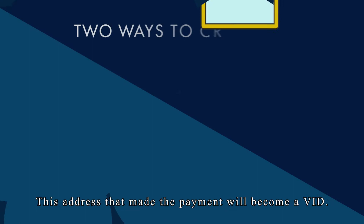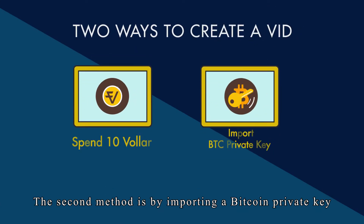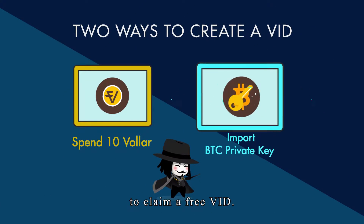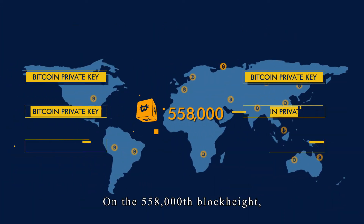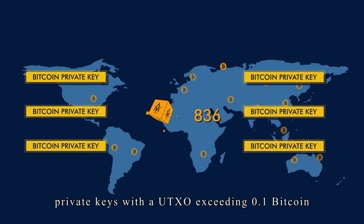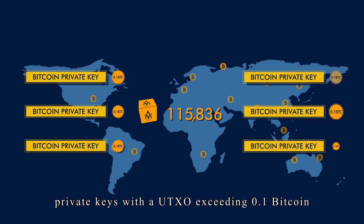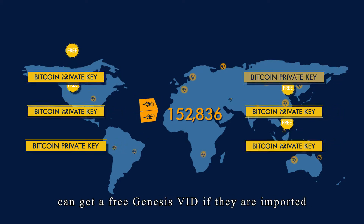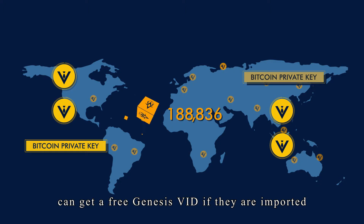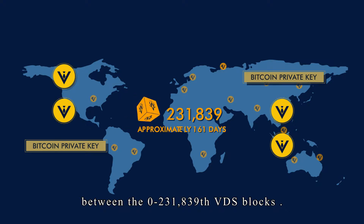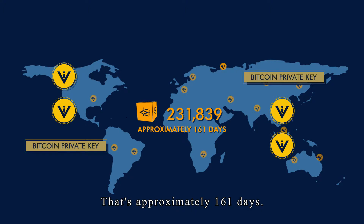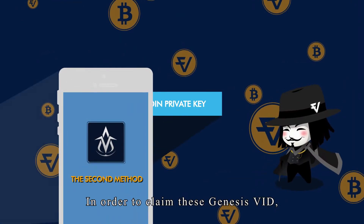The second method is by importing a Bitcoin private key to claim a free VID. On the 558,000 block height, private keys with a UTXO exceeding 0.1 Bitcoin can get a free Genesis VID if they are imported between the 0th and 231,839th VDS blocks — that's approximately 161 days.